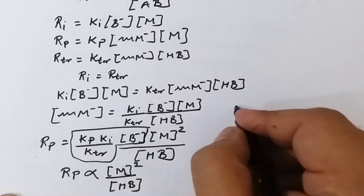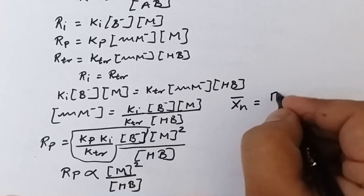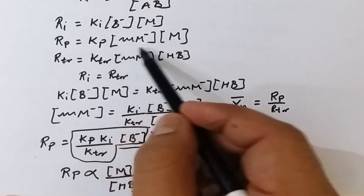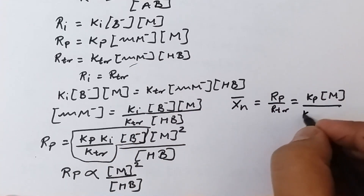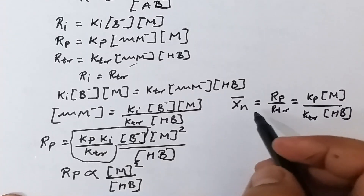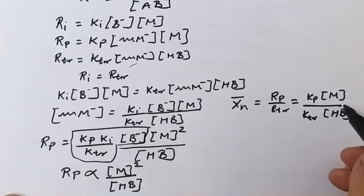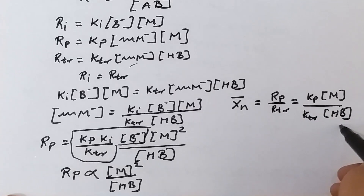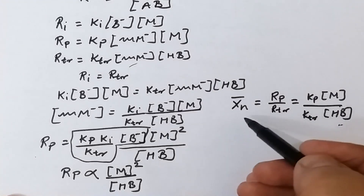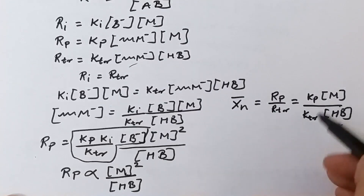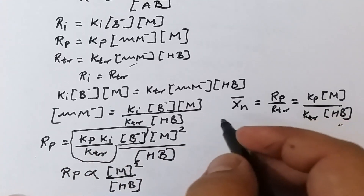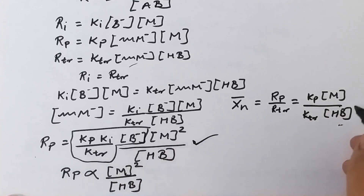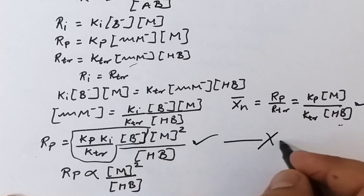If we increase the concentration of the proton donating agent, termination will be greater and the resulting polymer will have lower molecular weight. The degree of polymerization equals rate of propagation divided by rate of termination, giving kₚ[M] / (kₜᵣ[HB]). The degree of polymerization is directly proportional to monomer concentration and inversely proportional to the proton donating agent concentration. Increasing monomer increases both rate of polymerization and degree of polymerization, while increasing proton donating agent decreases both.